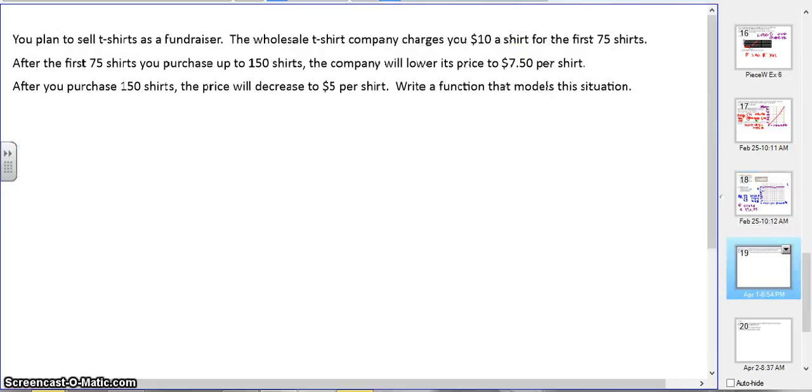Last question. Let's say you plan to sell t-shirts as a fundraiser. The wholesale t-shirt company charges you $10 a shirt for the first 75 shirts. After the first 75 shirts, you can purchase up to 150 shirts. The company will lower its price to $7.50 a shirt. After you purchase 150 shirts, the price will decrease to $5 a shirt. Write a function that models the situation. So F of X equals. So we have three different situations. First situation is $10 a shirt. So 10X. And that is for anything up to 75 shirts.